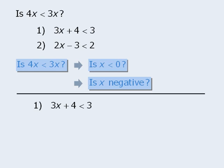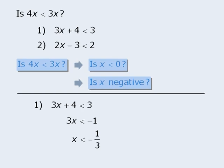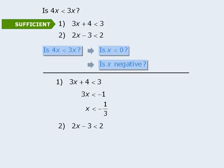Now let's examine statement 1. We can simplify by subtracting 4 from both sides and then dividing both sides by 3. So statement 1 essentially tells us that x is less than negative one-third. Does this provide sufficient information? Sure — if x is less than negative one-third, then x must be negative. So statement 1 is sufficient. On to statement 2. Isolating x by adding 3 to both sides and then dividing by 2 gives us x is less than 2.5. Does this provide sufficient information? No — if x is less than 2.5, x could be negative, but it could also be positive. So statement 2 is insufficient, which means our answer is A.